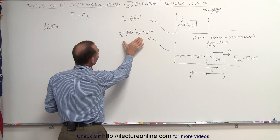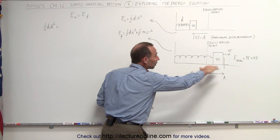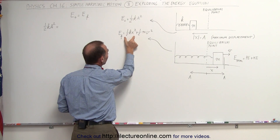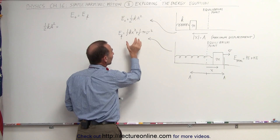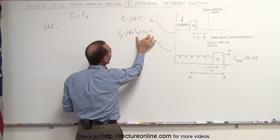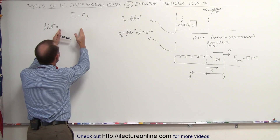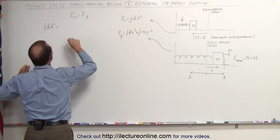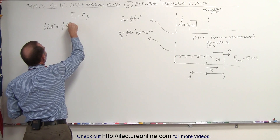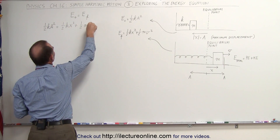So what we're going to do is write the final energy — meaning at any point along its path — as the sum of its potential energy stored in the spring, which will be less than the total energy it had in the beginning, plus some kinetic energy. That means on the right side of the equation we can write one half kx squared plus one half mv squared.